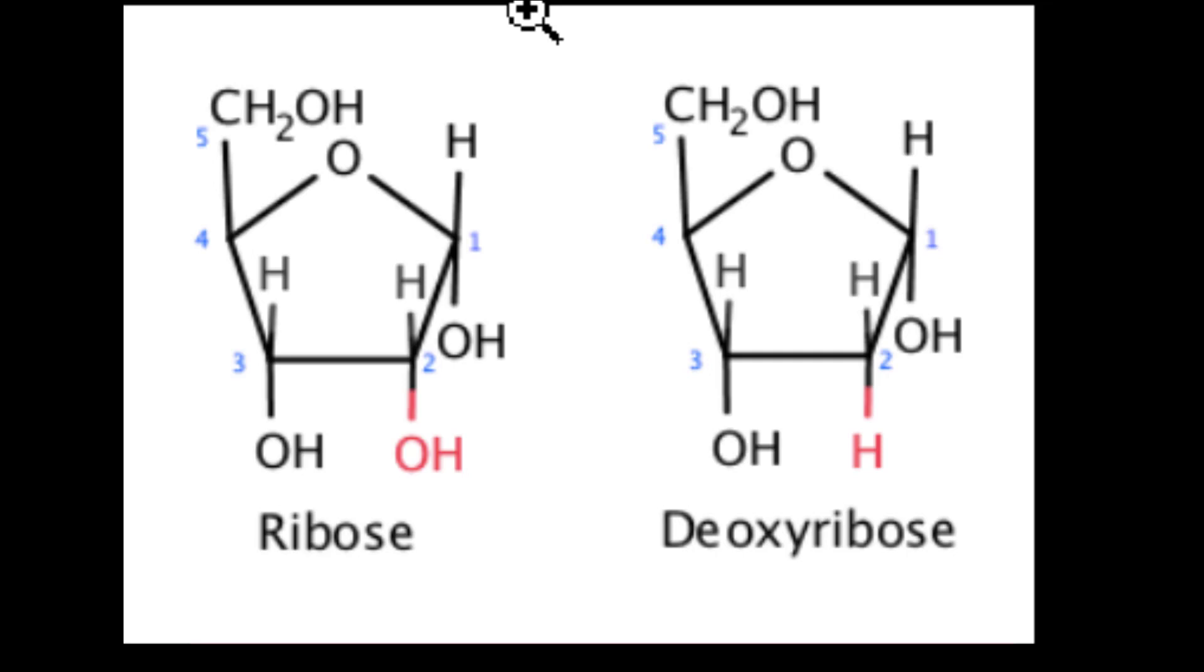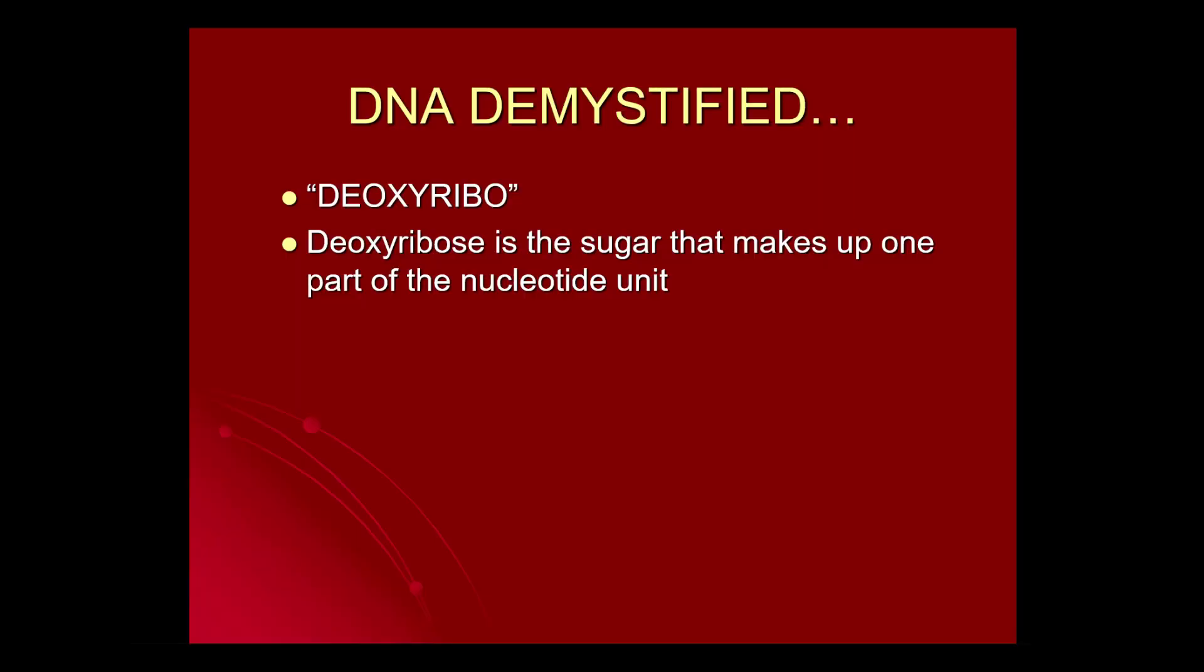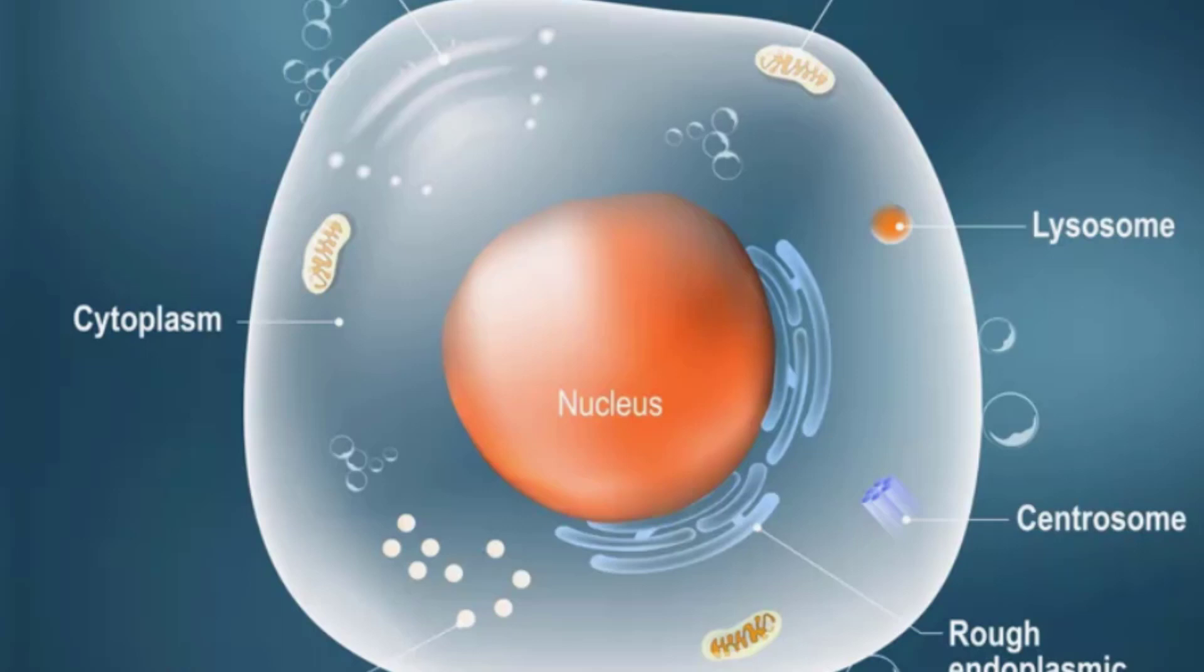So deoxyribose is a ribose sugar without oxygen in it, and this is the sugar that makes up one part of a nucleotide. And the nucleotides are the little individual building blocks of DNA that we'll talk about in a minute. The word nucleic now, that simply refers to the fact they discovered DNA in the nucleus.